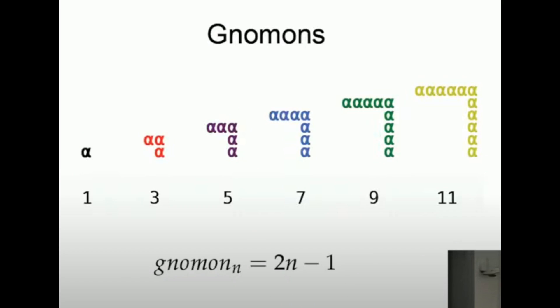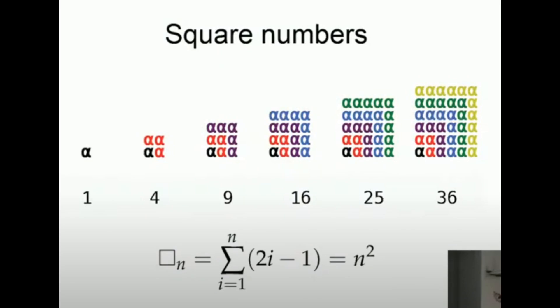Then it goes on to show gnomons, which I'd never heard about — they are just odd numbers. If you stack these gnomons, you get square numbers. Very cool. With that out of the way, we are now going to hear from Stepanov on the most romantic, if not the only romantic, of the mathematicians: Galois.